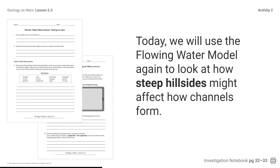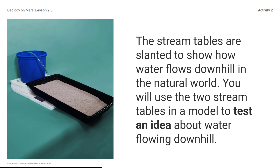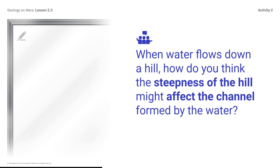You can find the observation sheets in the materials folder for the lesson. The stream tables are slanted to show how water flows downhill in the natural world. You will use two stream tables in a model to test an idea about water flowing downhill. When water flows down a hill, how do you think the steepness of the hill might affect the channel formed by the water?